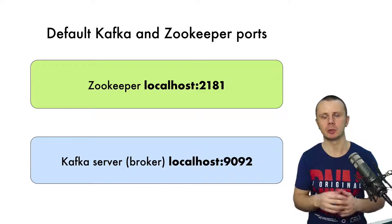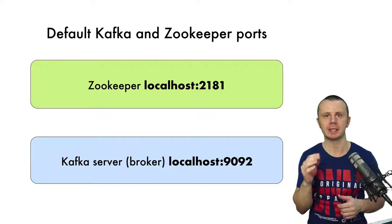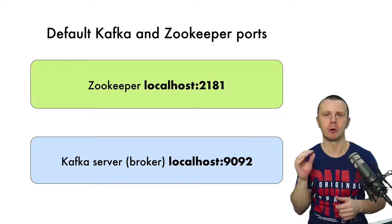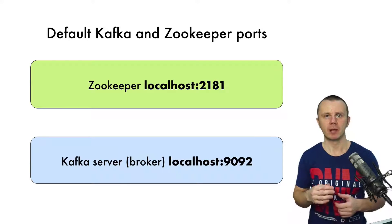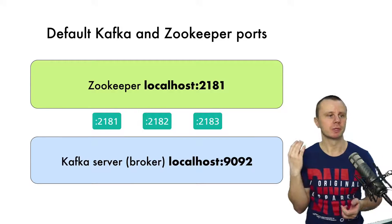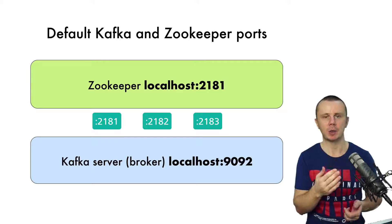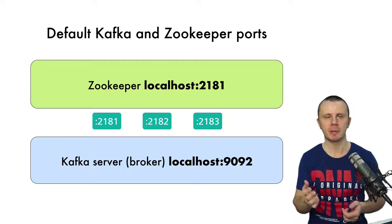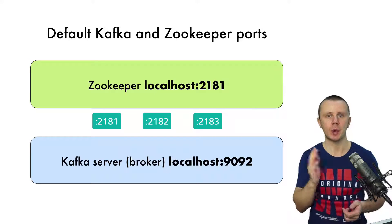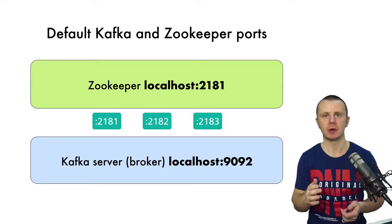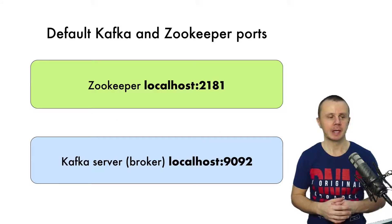It is also a good idea to create separate log folders for every instance. For example, you could use port 2181 for the first ZooKeeper, 2182 for the second one, and 2183 for the third one.